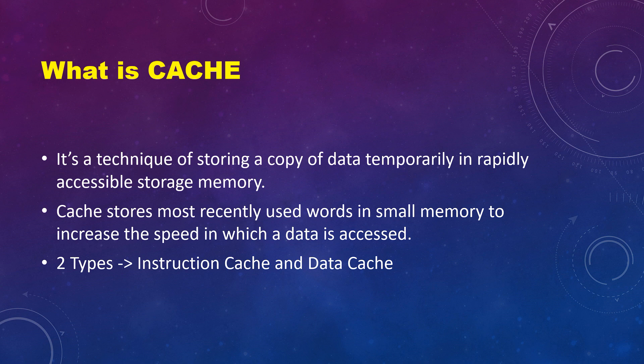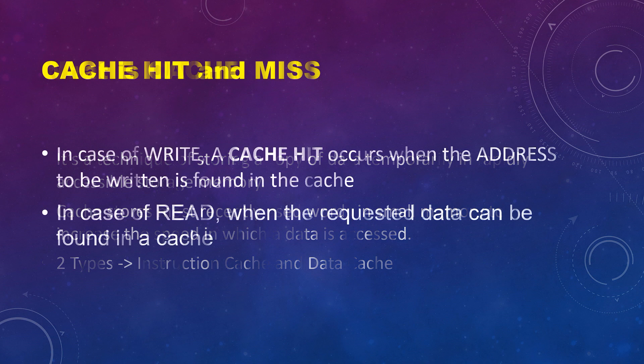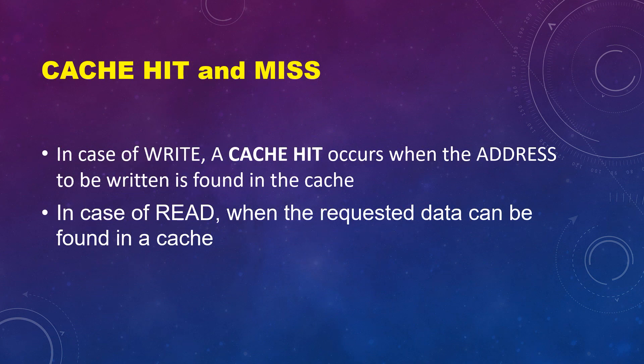Let's see some of the terms we are going to use in this video. First is cache hit and cache miss. If we are performing a write operation, a cache hit occurs if the address to be written is found in the cache memory, and if the address is not present, it's termed a cache miss. In case of a read operation, a cache hit occurs if the requested data is found in the cache, and if not, it's called a cache miss.